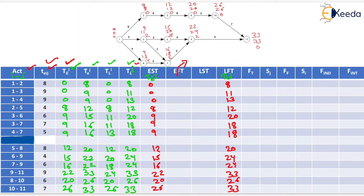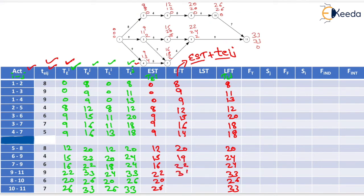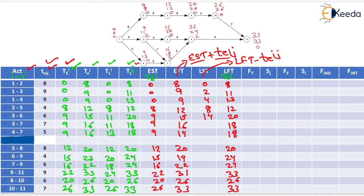Now we fill the EFT value, which equals EST plus activity time (TEIJ). The EFT values are: 8, 9, 9, 12, 15, 16, 14, 20, 19, 22, 31, 26, and 33. For LST, we subtract activity time from LFT. The LST values are: 0, 2, 4, 8, 14, 11, 13, 12, 20, 18, 24, 20, and 26.